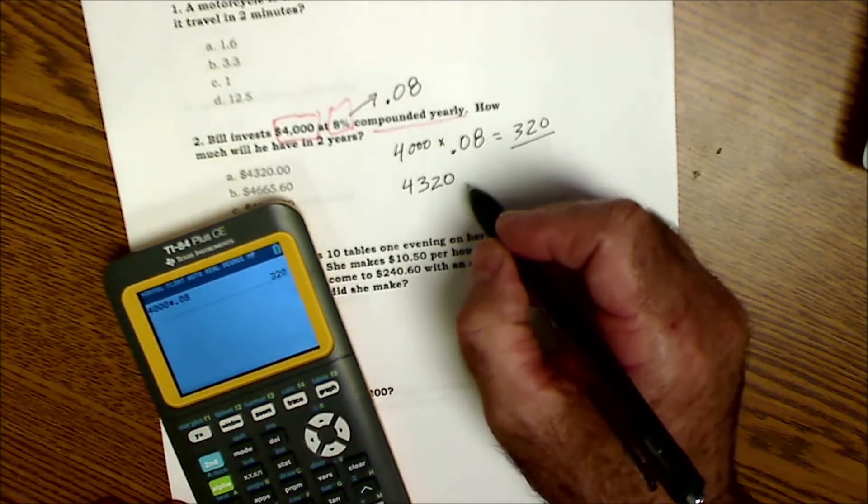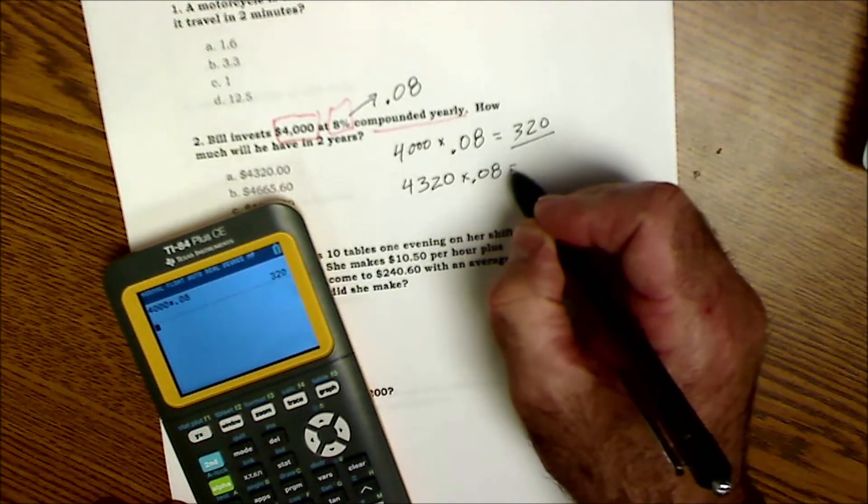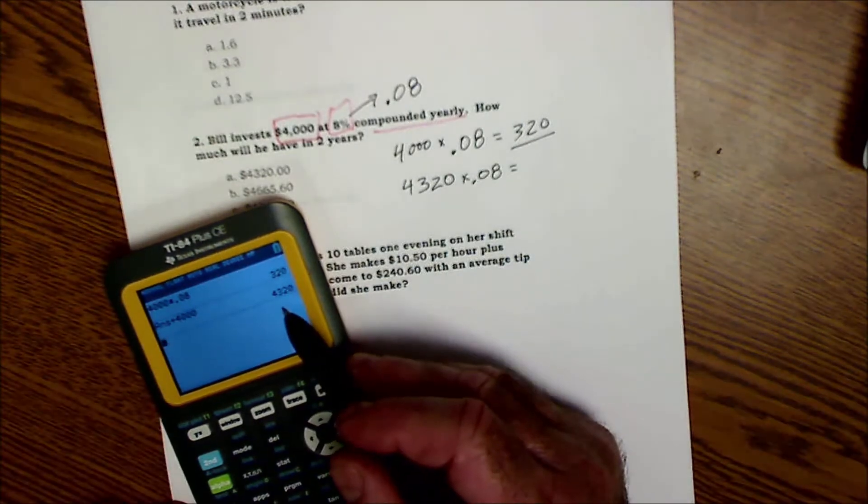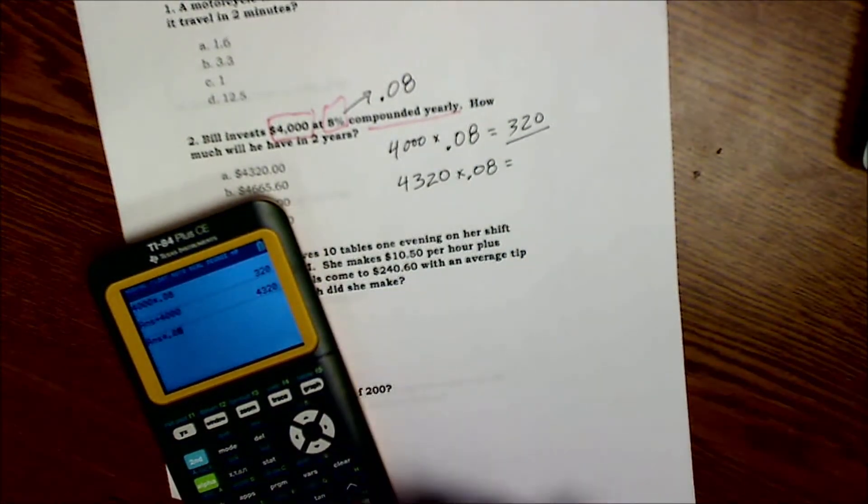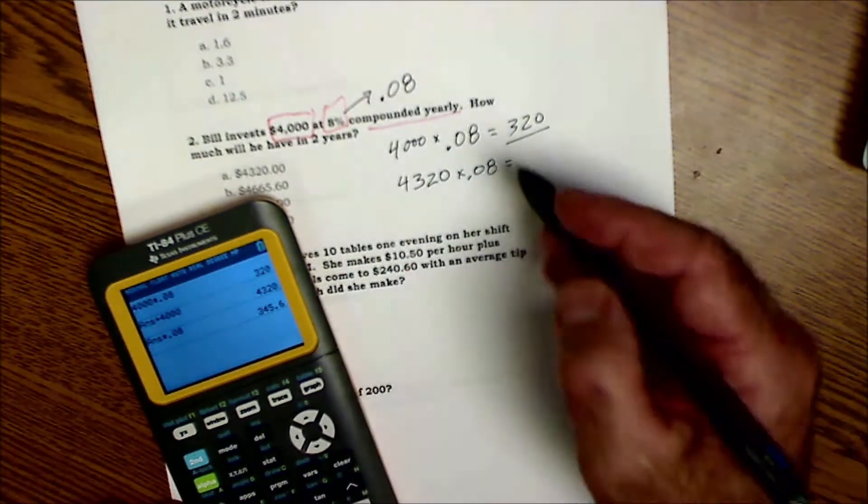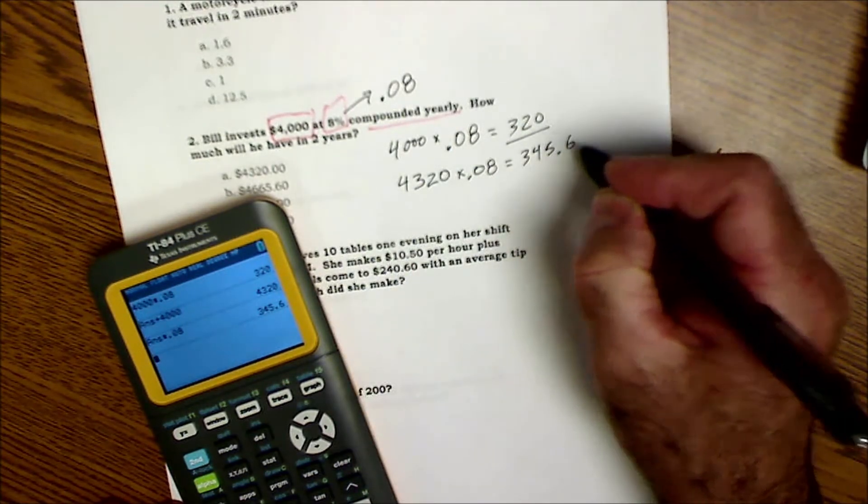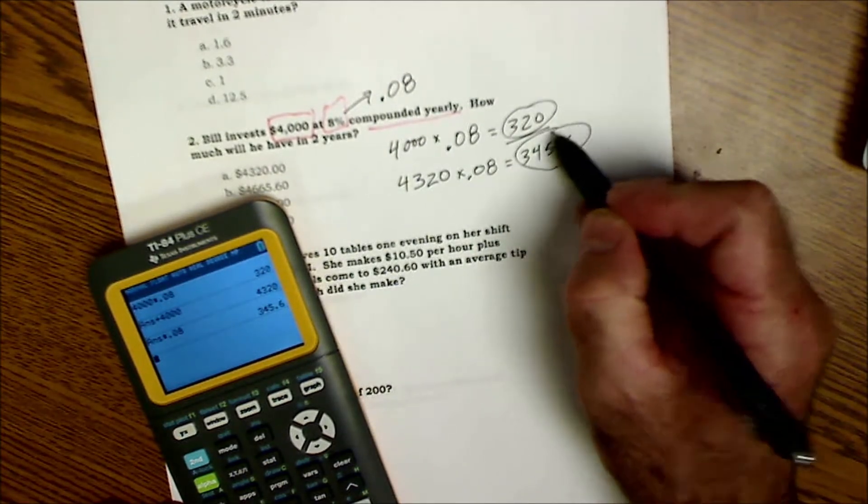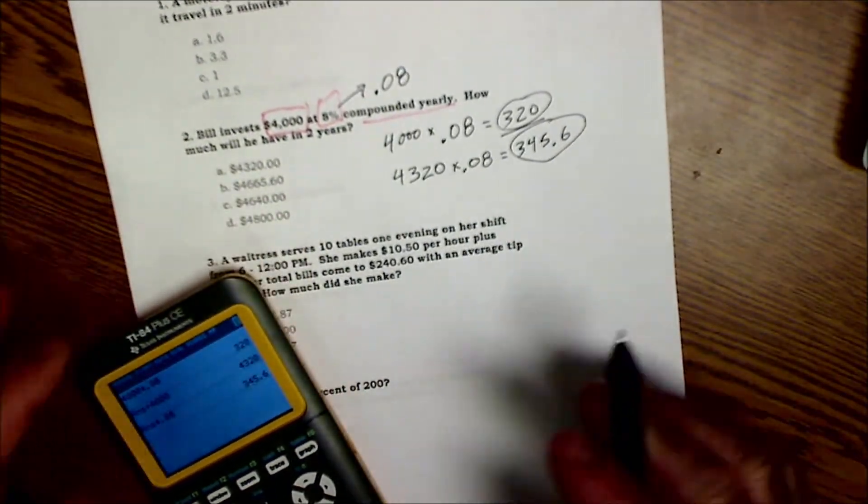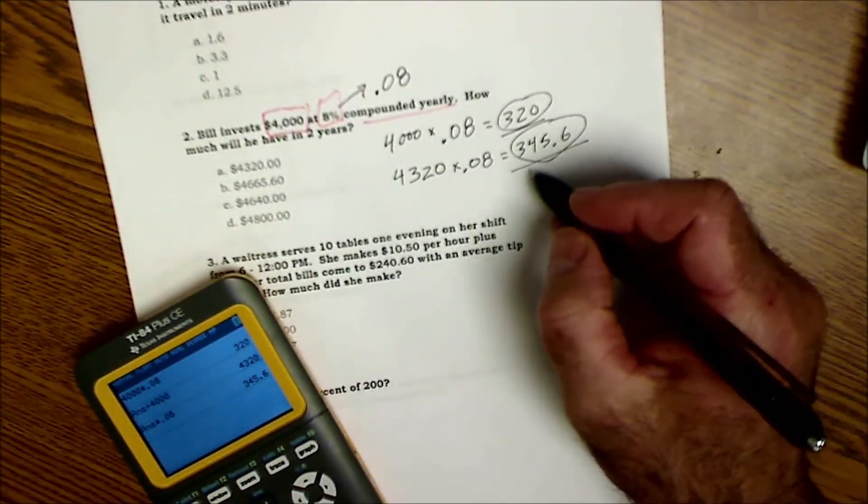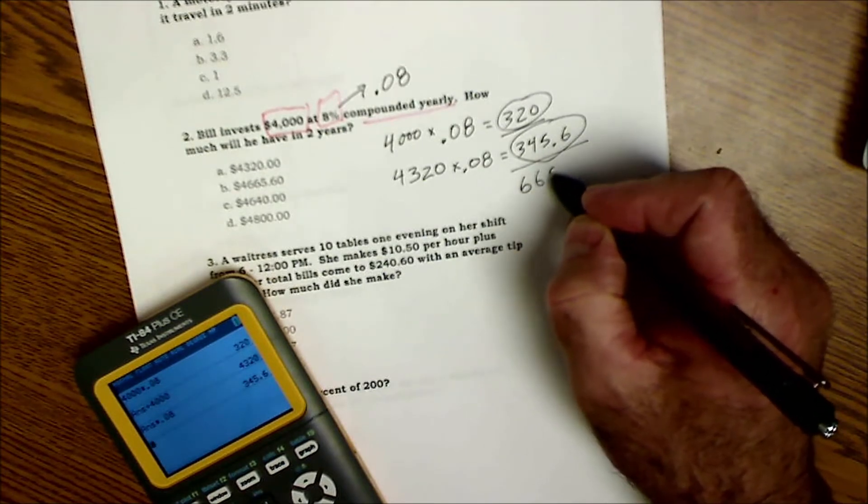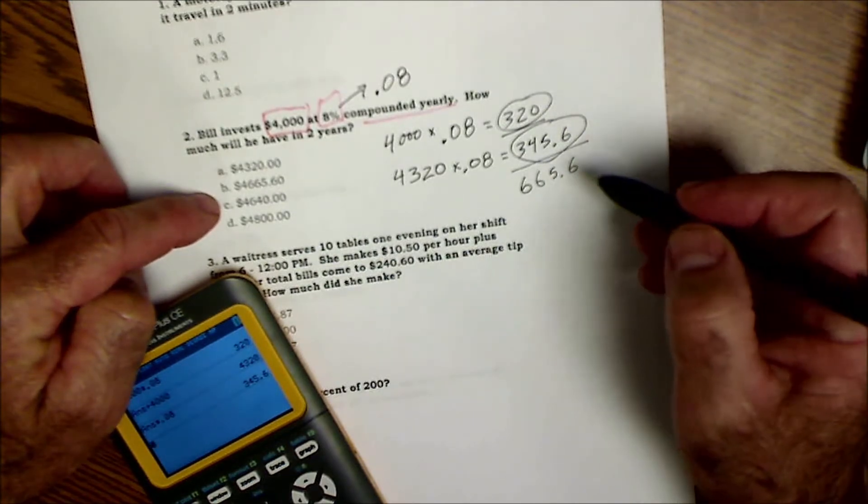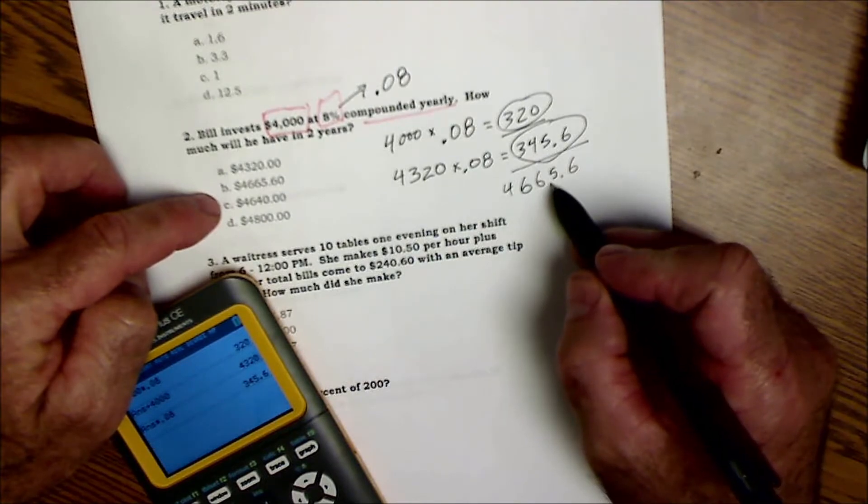And then you're going to make 8% on that, so you take that $4,320 and you multiply it again by 0.08. You're going to make $345.60 in interest. So you're going to make $320 the first year and then you earn interest on that interest, so you make $345.60 the second year. That's your total interest earned. What is that? $665.60 on top of the $4,000, so it's going to be $4,665.60. There it is right there, answer B.